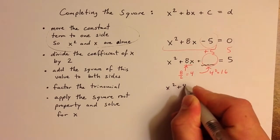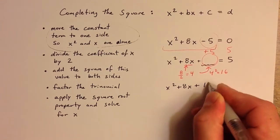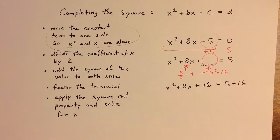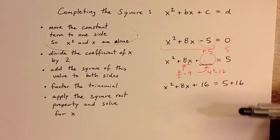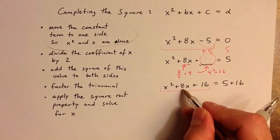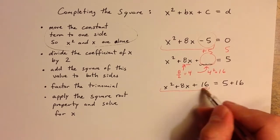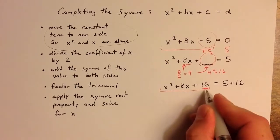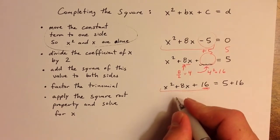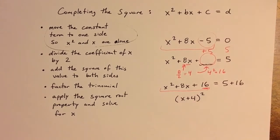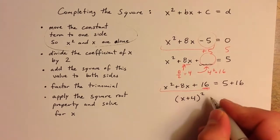I'm going to get 16, and that gives me a perfect square trinomial. But in order to get 16 on one side, I need to add 16 on the other side, so the other side becomes 5 plus 16. And now this factors. Taking half of 8, dividing 8 by 2 and squaring it — that's what gives me the perfect square trinomial. It factors: two numbers that multiply to 16 and add to 8 are 4 and 4, so I get x plus 4 squared.